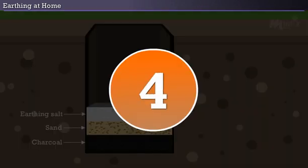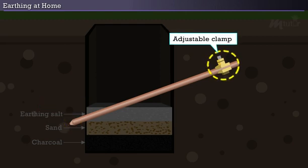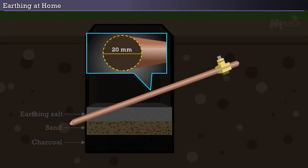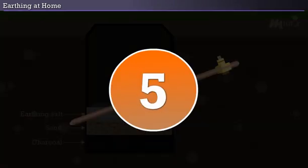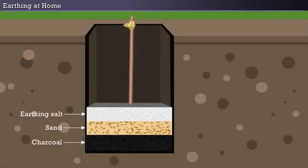Step 4: Next, take the grounding rod or earthing rod, where one end of the rod should be a conical tip. The other end of the rod should have an adjustable clamp. The diameter of the earthing rod should be 20 millimeters. The length should be 1500 millimeters. Step 5: Now, place the rod vertically inside the pit.